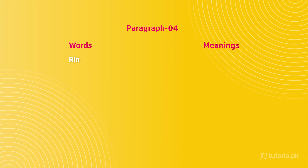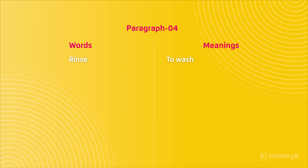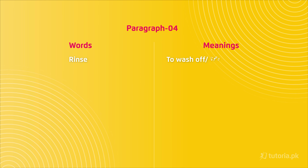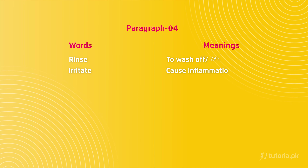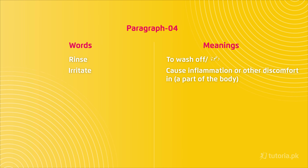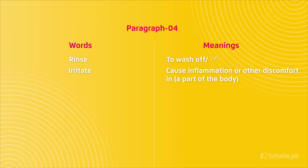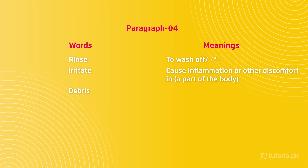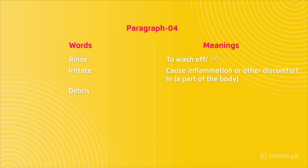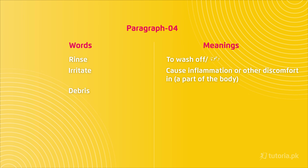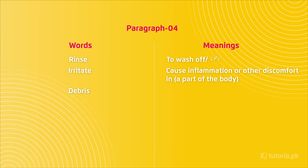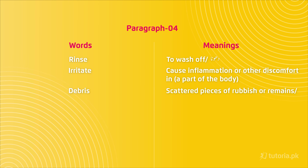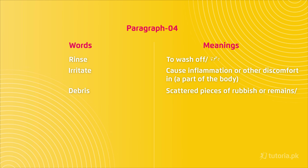Let's move on to our fourth paragraph and discuss difficult word meanings. First word is 'rinse,' jis ke meaning hai to wash off, yaani dhona. Second word is 'irritate,' which means cause inflammation or other discomfort in a part of the body. Third word is 'debris' — spellings hain d-e-b-r-i-s, lekin ise padhte hain 'debris' — is ke meaning hai scattered pieces of rubbish and remains, yaani tabah shuda cheez ki baqiyaat.